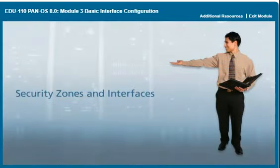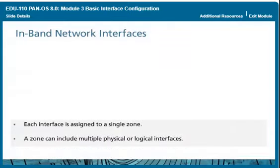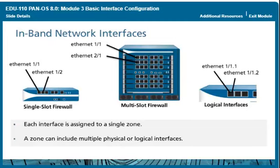Security Zones and Interfaces. All firewall models include in-band interfaces used to control network traffic flowing across an enterprise. These interfaces are labeled in the Web UI using the format Ethernet N/N. On a single-slot firewall, the first N is always 1 and the second N represents the port number. On a multi-slot firewall, the first N represents the slot number. Each firewall interface supports multiple logical interfaces called sub-interfaces. A physical port or sub-interface can be assigned to only a single security zone; however, a zone can contain multiple interfaces.